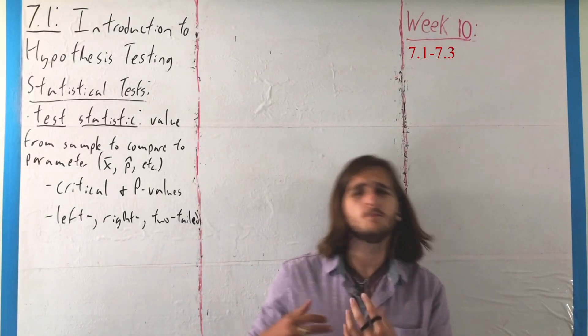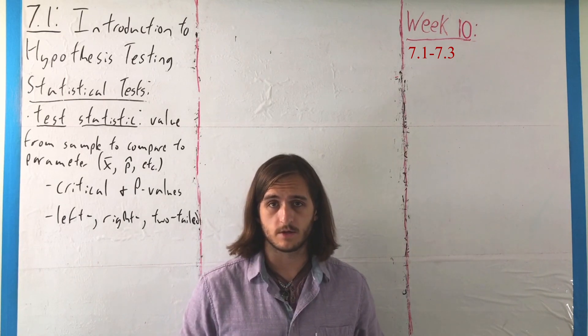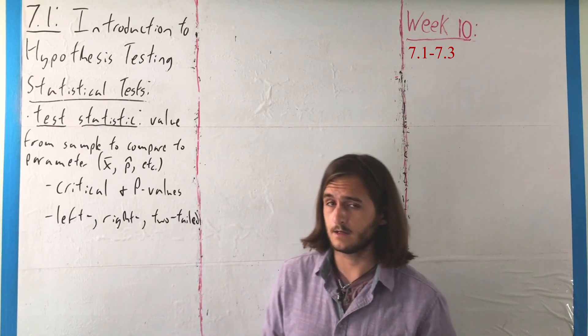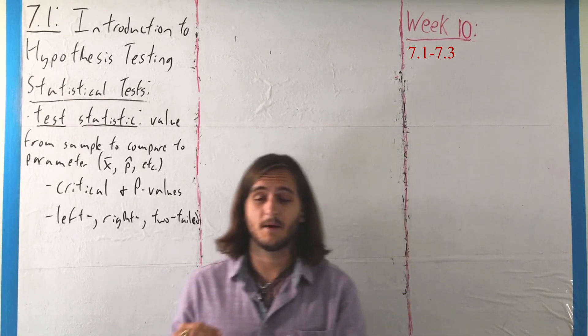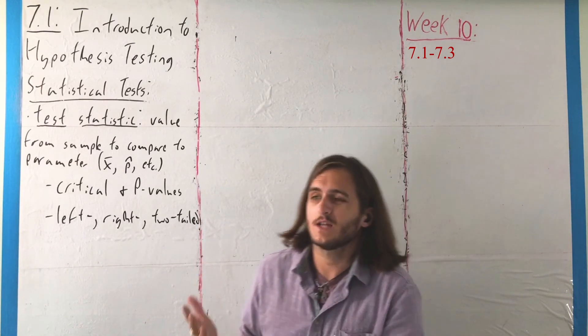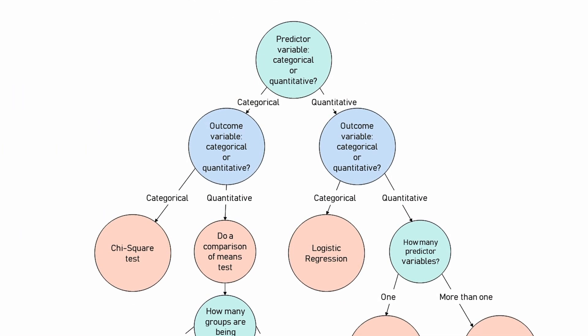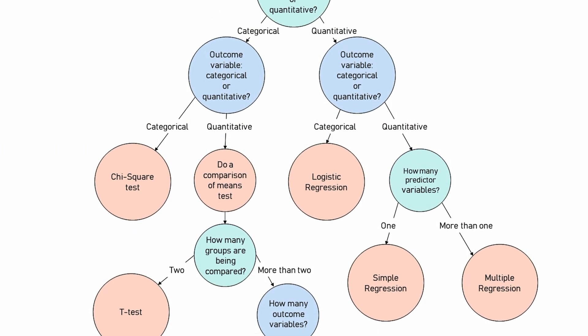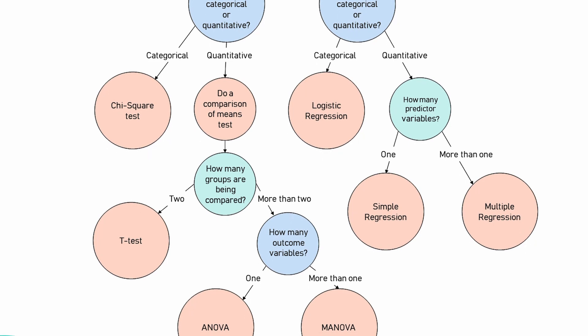So, now that we've seen the two big setup pieces for dealing with a statistical test, that is identifying our hypotheses and then our level of significance, with those in mind we can then actually get into the process of performing the test itself. All we've seen so far is, like I said, the setup.